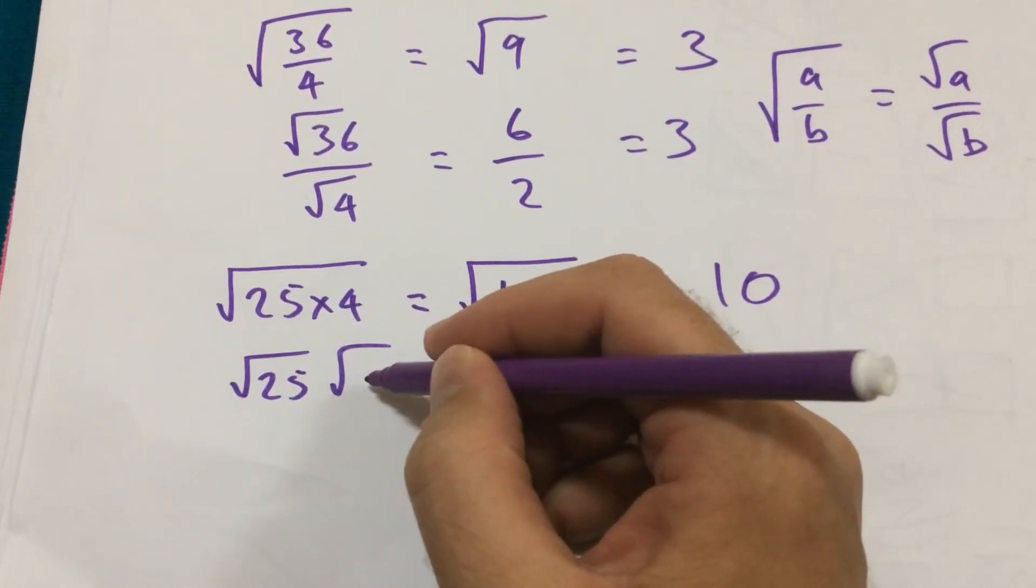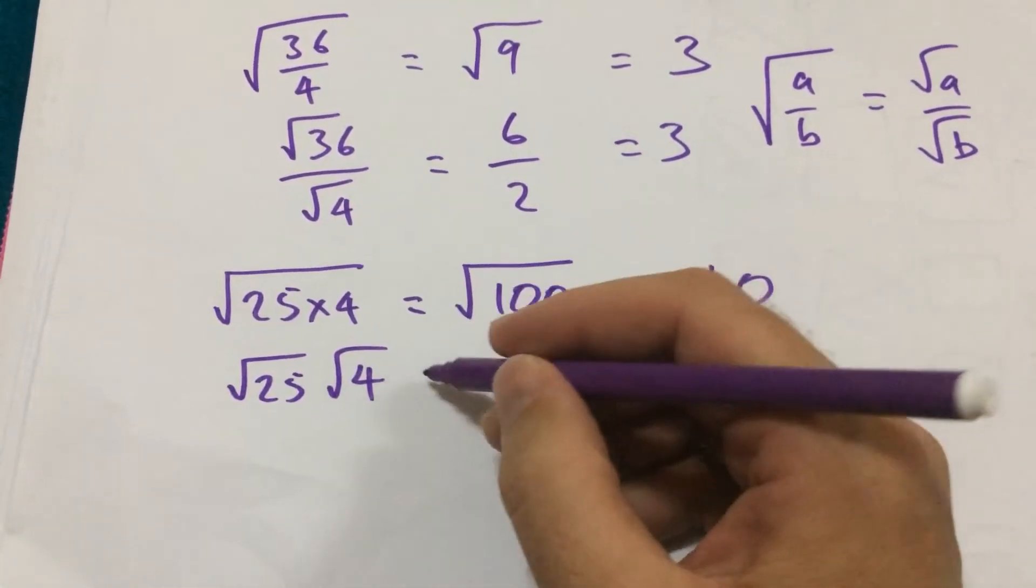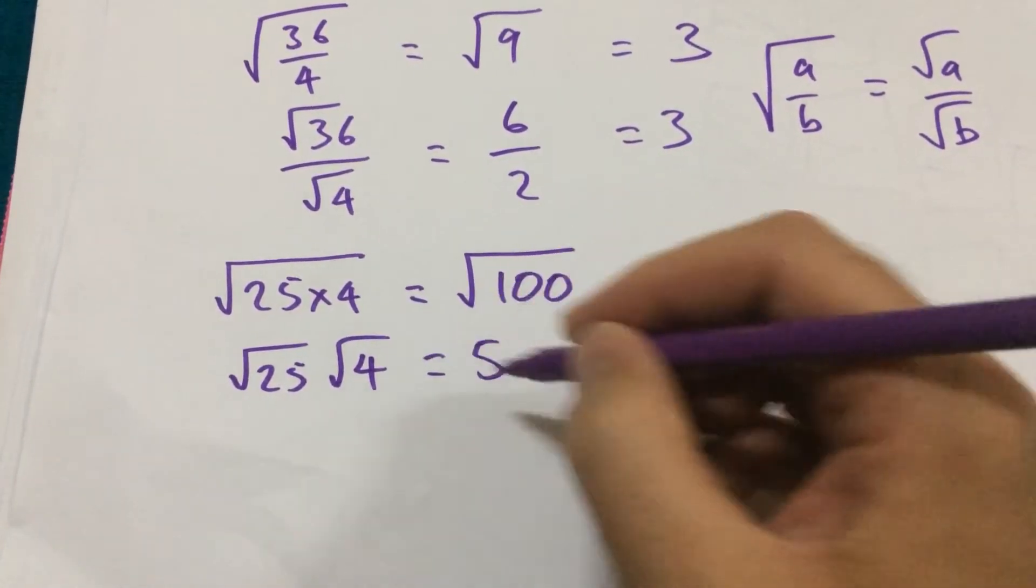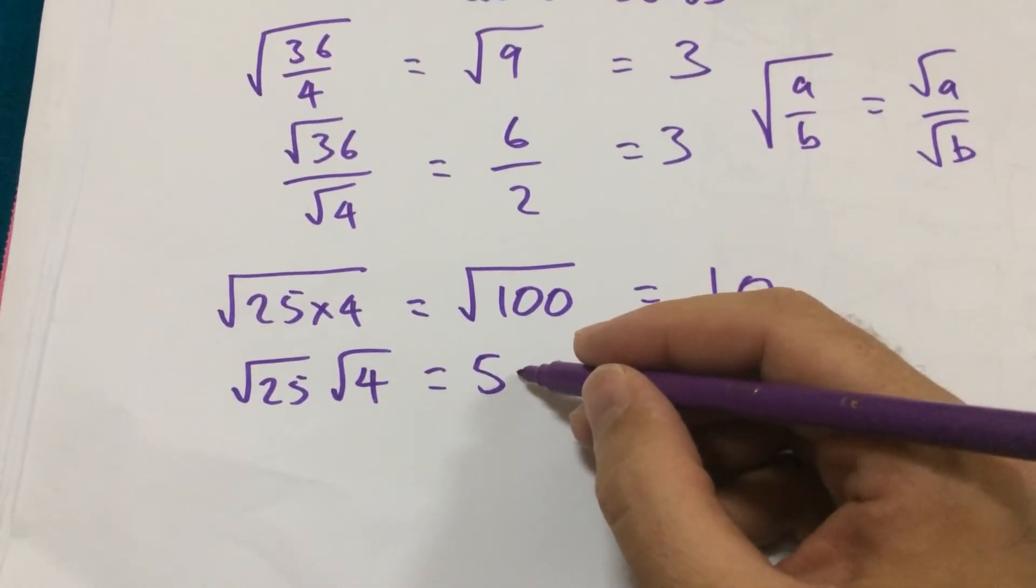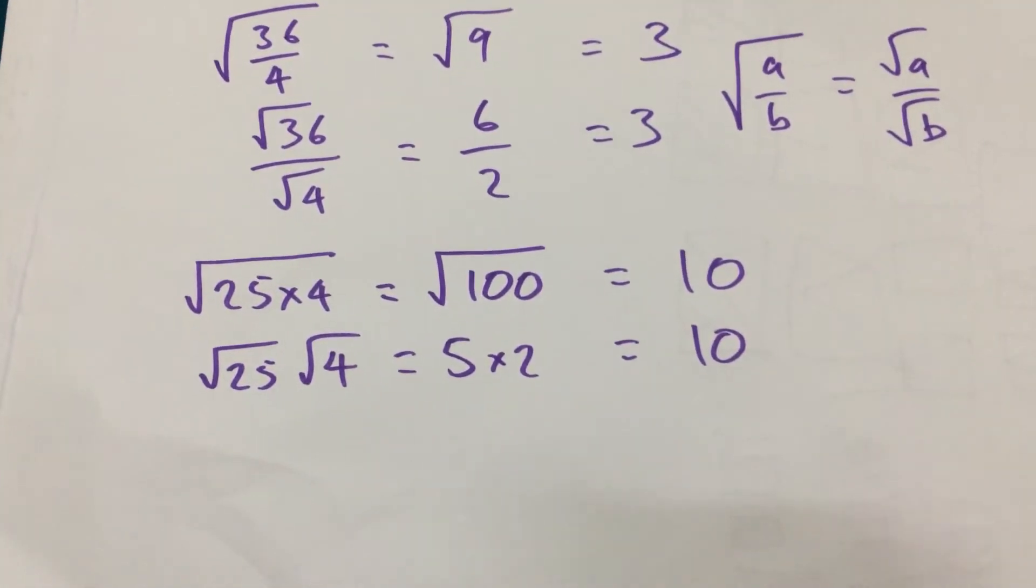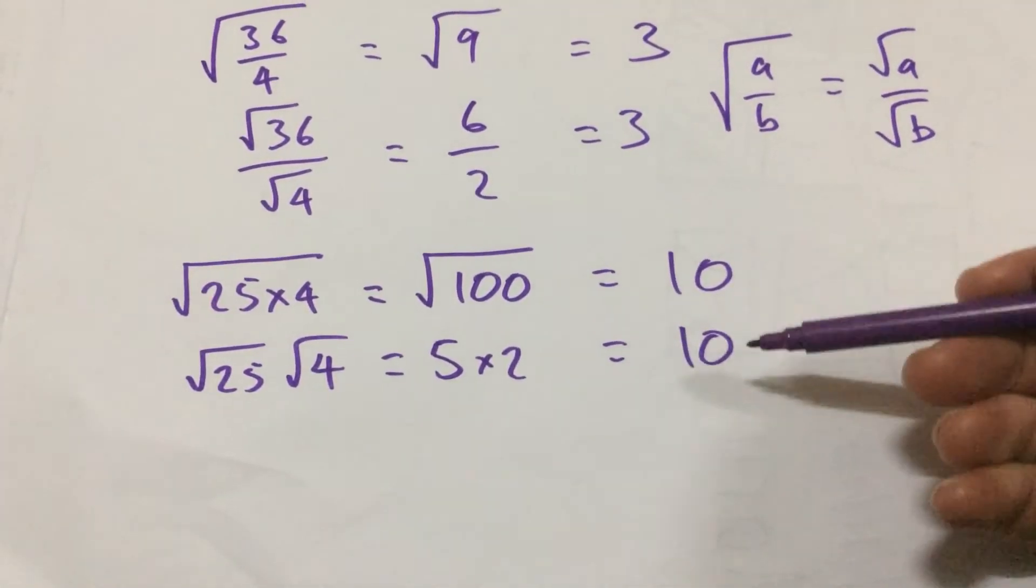If we look at root 25 times root 4, well, square root of 25 is 5, square root of 4 is 2. So 5 times 2 is 10 as well. So those two are equal.